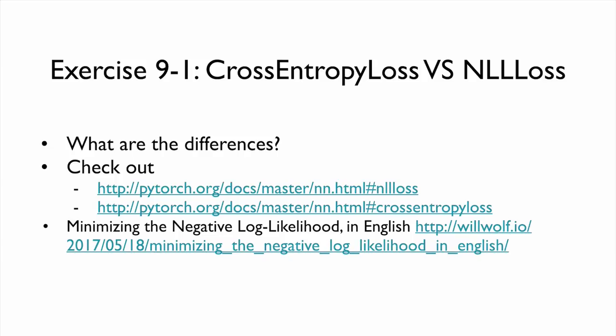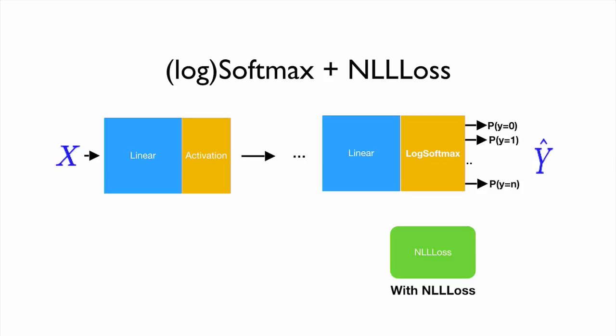In PyTorch, there is another way to implement the softmax classifier using NLLLoss. As an exercise, we can figure out how to use NLLLoss for the softmax classifier. A simple hint is that you can use log_softmax together with NLLLoss, which is basically equivalent to using CrossEntropyLoss.